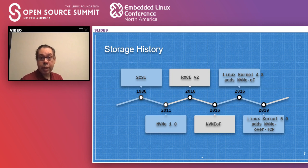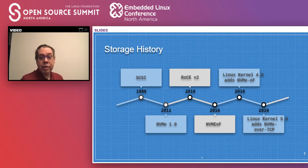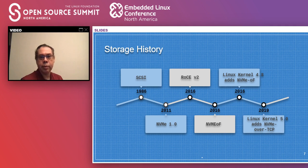On the storage side: a long time ago, SCSI was released as an interface to interact with storage in a faster way. Then in 2011, NVMe 1.0 was released as a way to communicate with solid state drives — faster storage emerged. Then in 2016, RoCE — RDMA over Converged Ethernet v2 — was released, providing a way to use Ethernet as a medium to access memory directly.